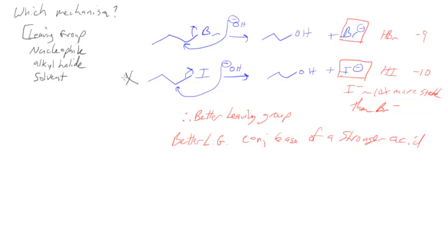So that would make this reaction faster with iodide as my leaving group than the first reaction with bromide as my leaving group. So that compares between those two, but those are both SN2 mechanisms.